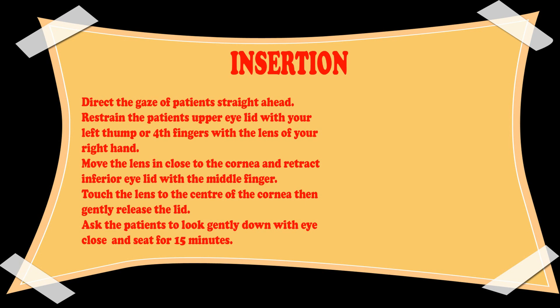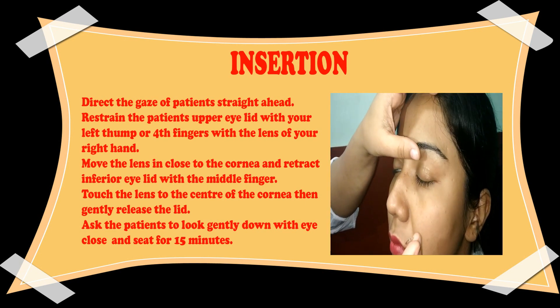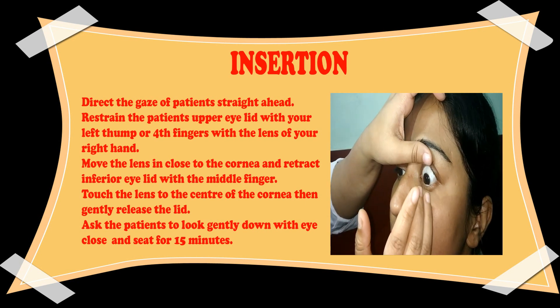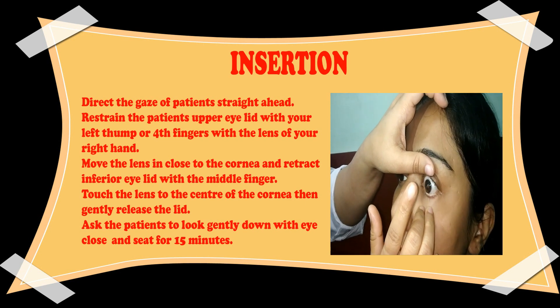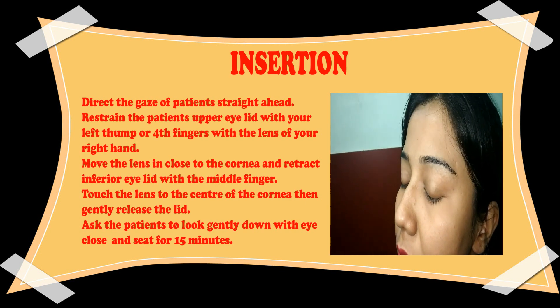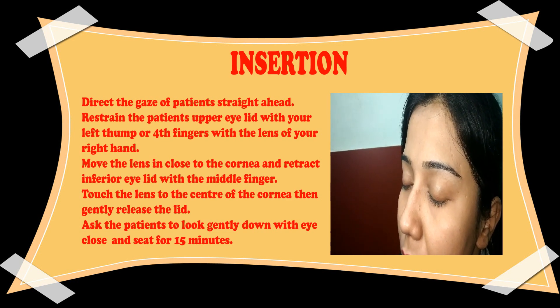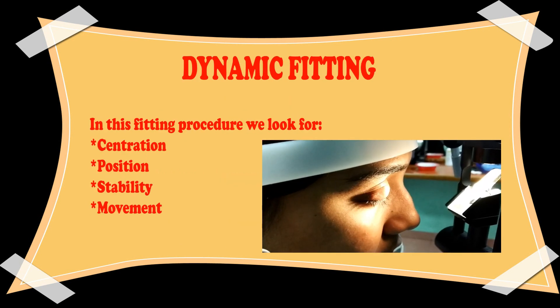For insertion of the RGP contact lens, ask the patient to look straight. Restrain the patient's upper eyelid with your left thumb and place the lens on your fourth finger of the right hand. Move the lens closer to the cornea and retract the lower lid inferiorly with the middle finger of your right hand. Turn the lens to the center of the cornea, then gently release the lid.